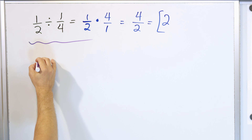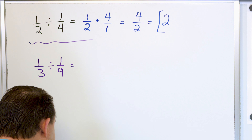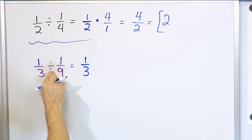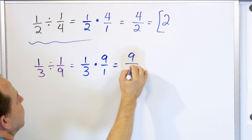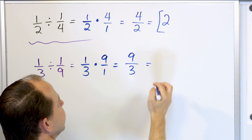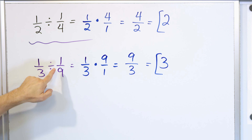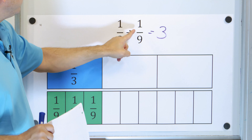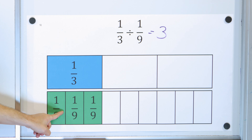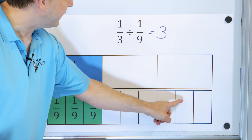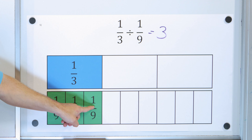Let's take 1/3 and divide it by 1/9. The 1/3 stays the same, division changes to multiplication, and 1/9 becomes 9 over 1. Multiply: 9 times 1 is 9, and 3 times 1 is 3. Nine divided by 3 is 3, so it goes 3 whole times. Pictorially, 1/3 has three equal pieces, and one ninth is one of nine equal slices in the whole. One ninth can go one time, two times, three times — which matches the answer.